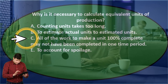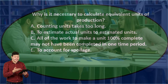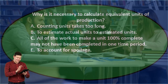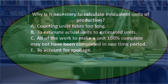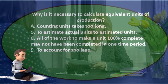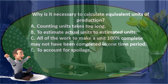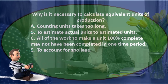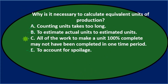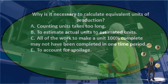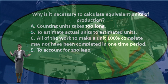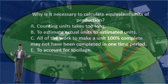Note that C is again the longer, more specific answer — a possible indication on multiple choice that it's trying to rule out instances where it wouldn't be true, making it a true answer. Final answer: C) all of the work to make a unit 100% complete may not have been completed in one time period. That means we have partially completed units, and we use equivalent units as a tool to allocate costs to those partially completed units.